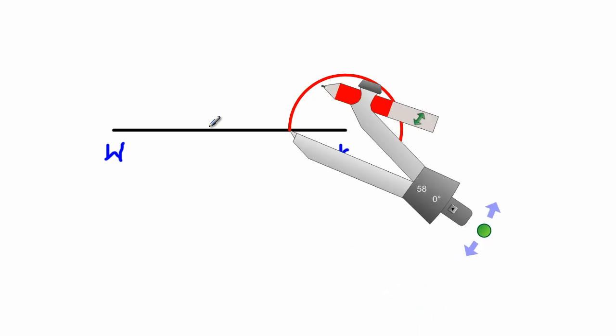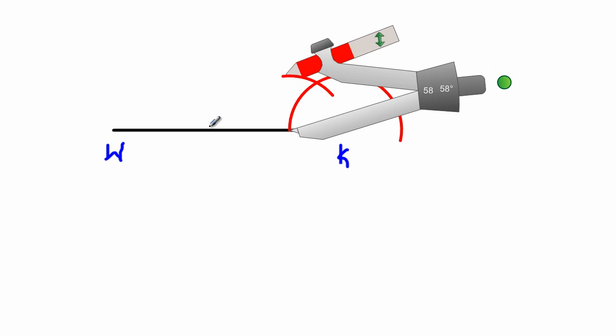I am going to swing an arc from that point, cutting the arc that I swung before. Now again, after I've swung that arc, I am going to take my compass.